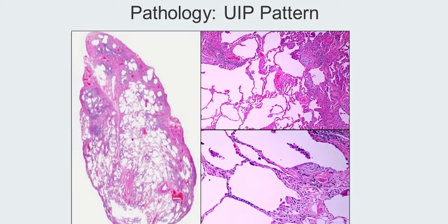The first thing to note is the heterogeneity — different things happening in different parts of the lung. Here you see more normal alveolar tissue within the center of the lung. You get a sense that there's subpleural fibrosis; all that pink shown towards the right is subpleural fibrosis, and then you see microscopic honeycomb cysts amongst the subpleural fibrosis.